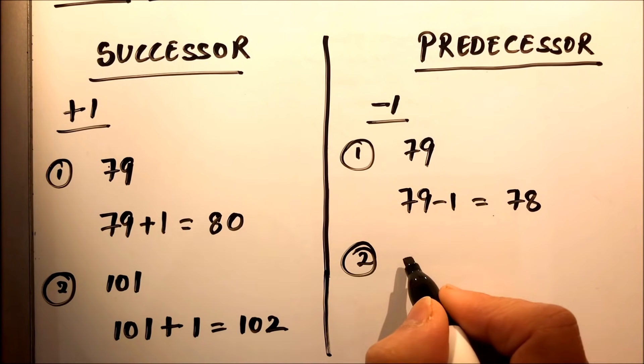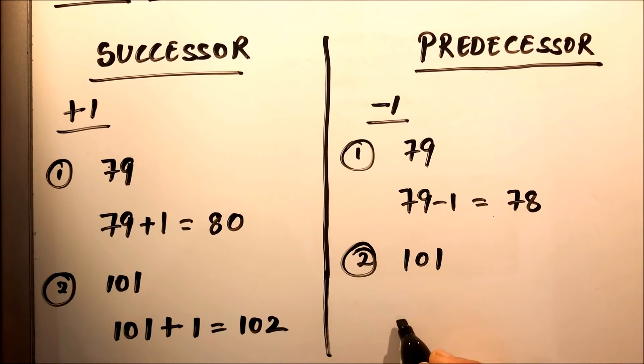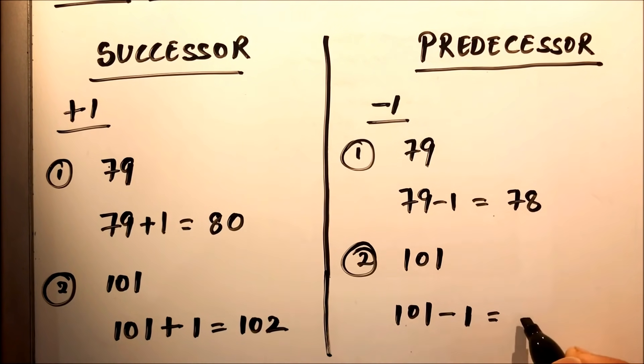Similarly, if you are asked to find the predecessor of 101, it will be 101 minus 1, which is 100.